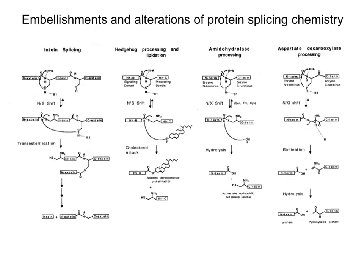There are other alterations of the protein splicing chemistry found in various mechanisms. Here's regular intein splicing with the N-to-S acyl shift, then transthioesterification — electrons come up and down, kick this off — then succinamide formation, generating the intein coming out and the two halves of the N-terminal and C-terminal exteins. This mechanism we've already covered in detail. Hedgehog processing and lipidation also involve the same N-to-S acyl shift, but instead, cholesterol comes in and attacks, electrons come up and down on the oxygen, kick this off, generating the hedgehog N-terminus conjugated to cholesterol.